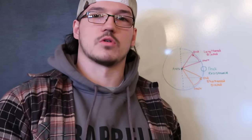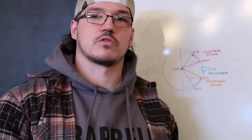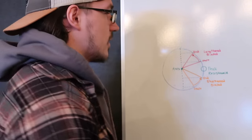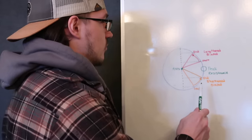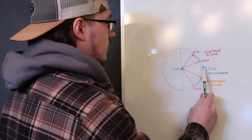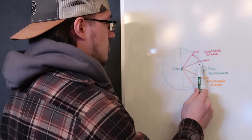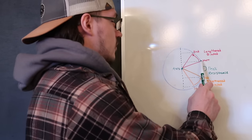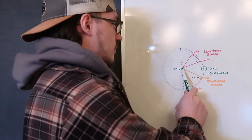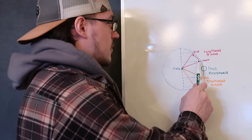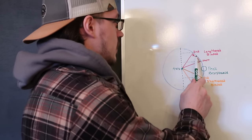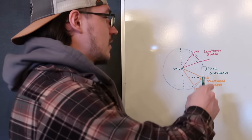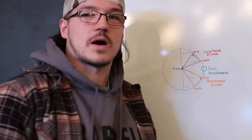Not every machine or setup goes through peak resistance — some are specifically short-biased and some are specifically lengthened-biased. For a lengthened-biased movement, you start above peak resistance and then push or pull up and away from it. You start farther from the axis where there's a greater moment arm, and as you press or pull, you get closer to the axis, shortening the moment arm. This is what makes a lengthened-biased movement.